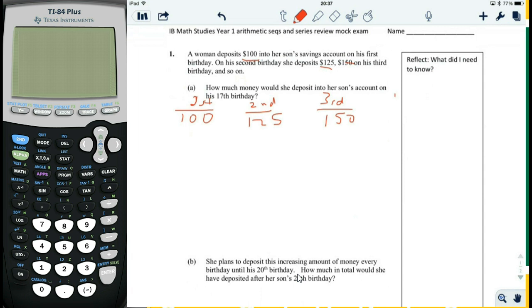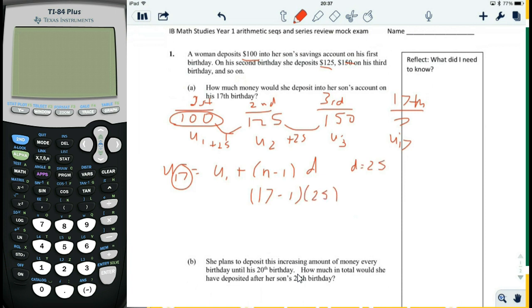How much money would she deposit on his 17th birthday? This is U1, this is U2, this is U3. They want to know what's U17. Well, U17 is U1 plus n minus 1 times d, and n minus 1 is 17 minus 1, because this is n. U1 is 100. What's d? The jumps here are 25, plus 25, plus 25, so d is 25. U1 is 100, and now we have everything we need.